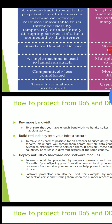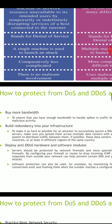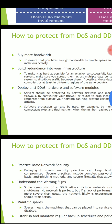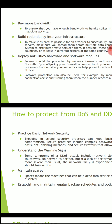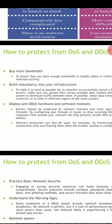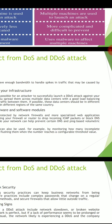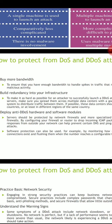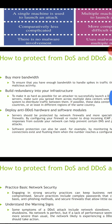How to protect against DOS and DDOS: buy more bandwidth; build redundancy into your infrastructure; deploy anti-DOS hardware and software modules; practice basic network security principles; understand the warning signs whenever they come. Build redundancy into your infrastructure means making it as hard as possible for an attacker to successfully launch a DOS attack against you — spread resources across multiple data centers with a good load balancing system to distribute traffic between them.